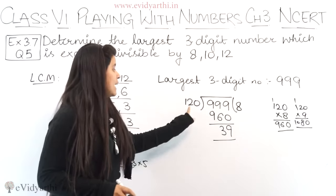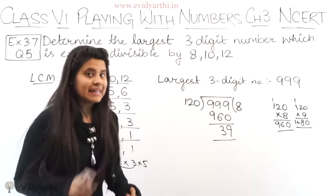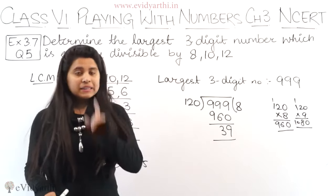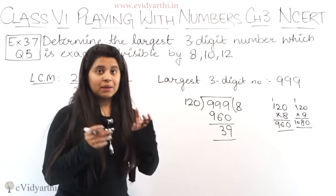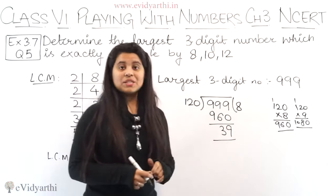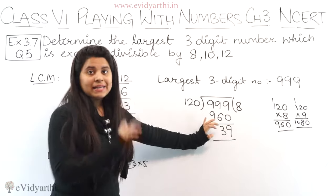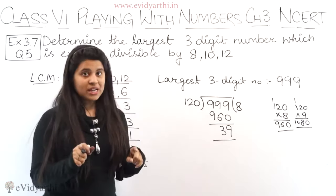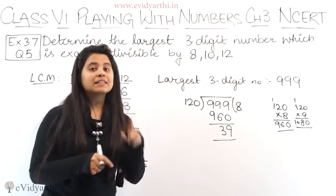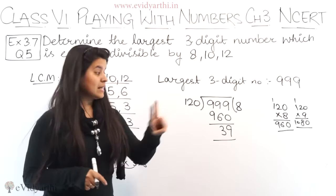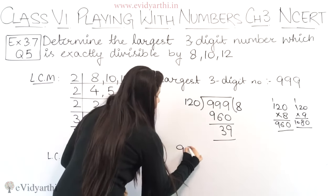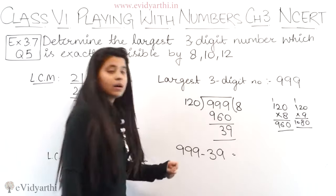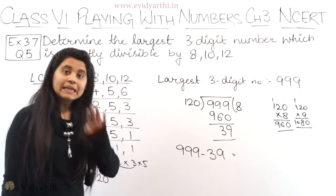This means 999 is not divisible by 120. But the remainder left here is 39. As we did in the last question, if we subtract the remainder from the number, then it will become divisible. However, in the last question we had the smallest 3-digit number, and subtracting there gave a 2-digit number. But here, if we subtract 39 from 999, we will still get a 3-digit number.